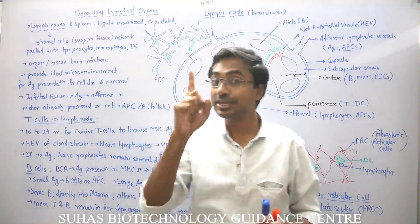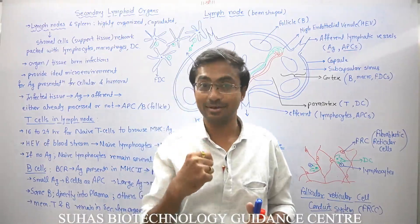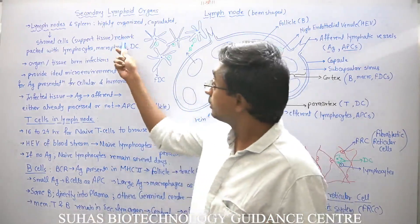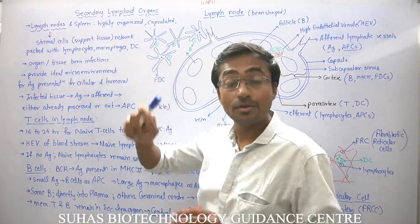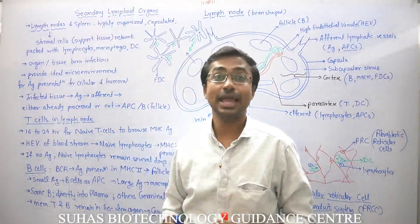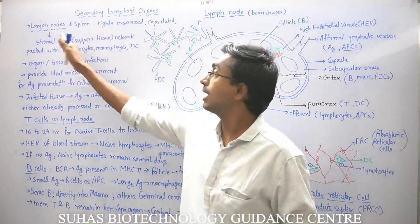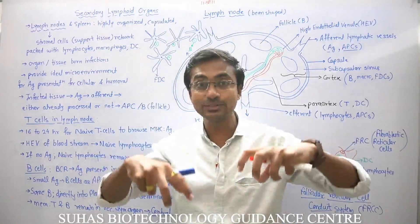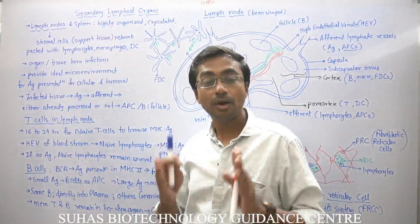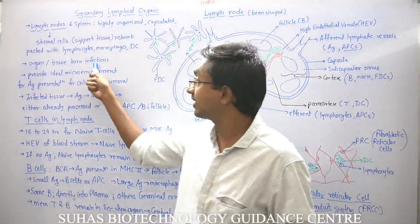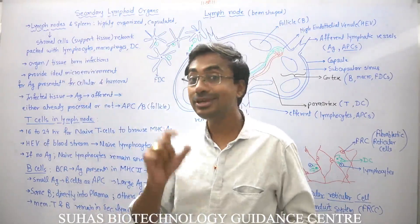Secondary education is very specific for only that antigen which has infected our body. The network inside is packed with lymphocytes, macrophages, dendritic cells, follicular dendritic cells, and many other types of cells. This complete network is supported by the stromal cells — the native cells present in the lymph node. All organ-borne or tissue-borne infections will be taken care of in the nearest lymph node.